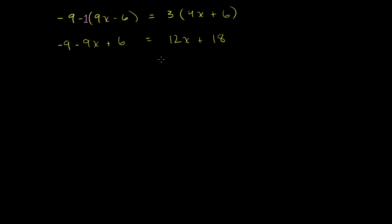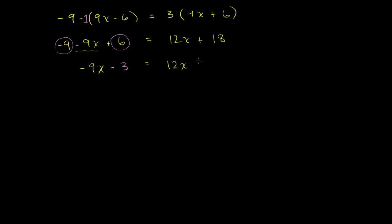Now let's combine our constant terms. We have a negative 9 and a 6 here on the left side. We can't combine 12x and 18 on the right, so let's combine negative 9 and 6. Negative 9 plus 6 is negative 3. So we're going to have negative 9x minus 3 on the left, and that is equal to 12x plus 18.